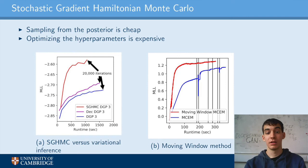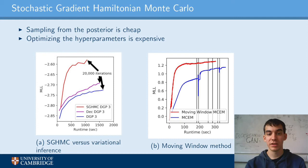In most scenarios, MCMC sampling is more computationally intensive than variational methods. However, Gaussian processes are a special case because most of the computational cost is associated with optimizing the hyperparameters, while sampling from the posterior is relatively cheap.